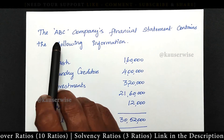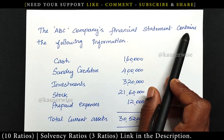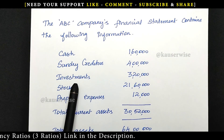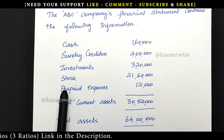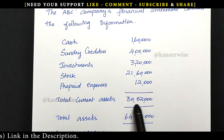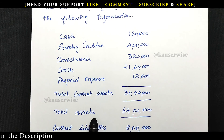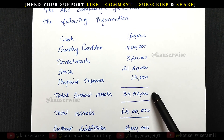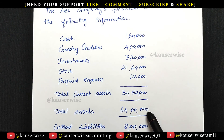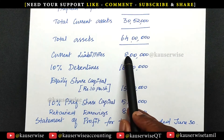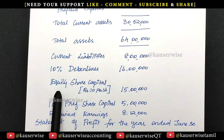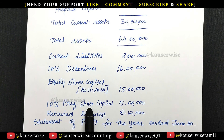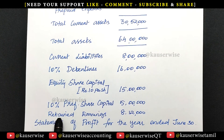See the problem. ABC company's financial statement contains the following information: cash, sundry creditors, investment, stock, prepaid expenses — giving total current assets, and then total assets, which consists of total current assets plus total fixed assets. Then current liabilities, 10% debentures, equity share capital at rupees 10 per share, 10% preference share capital, and retained earnings.